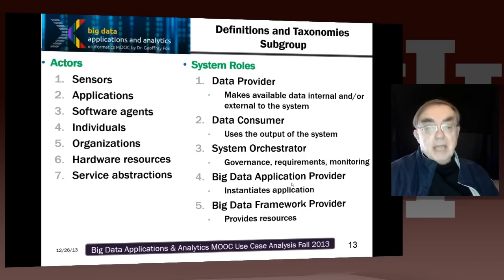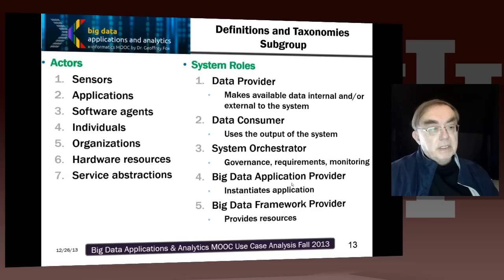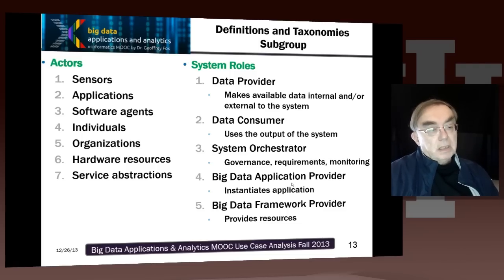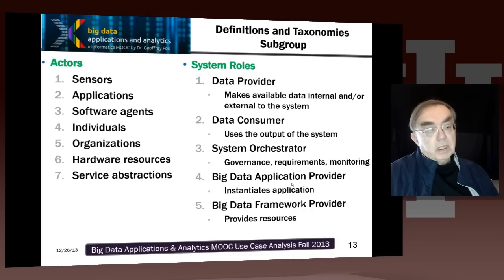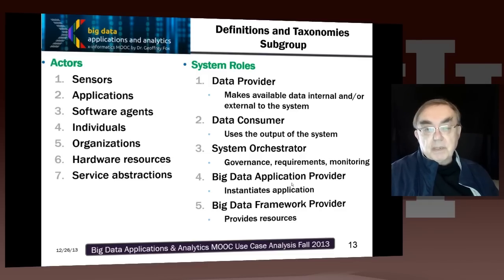Here are the actors and the roles. Actors are the components we need to bring together to do a big data system: the applications, the software subsystems, the sensors, the people, the organization, the various services — service abstractions. The important concept of services is that they have to have abstractions. The services are black boxes that receive information, data, and control, and give out information, data, and control. Having an abstraction of what that service does is pretty important in allowing people to have a service ecosystem where different people build different services, or different people compete to build the same service.